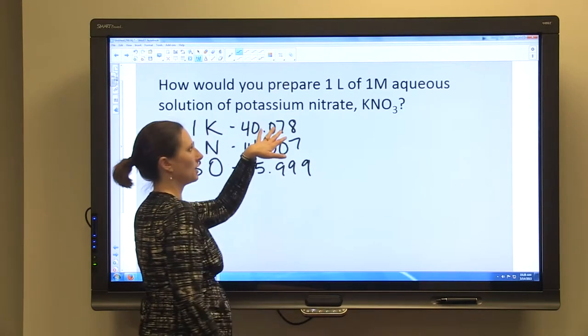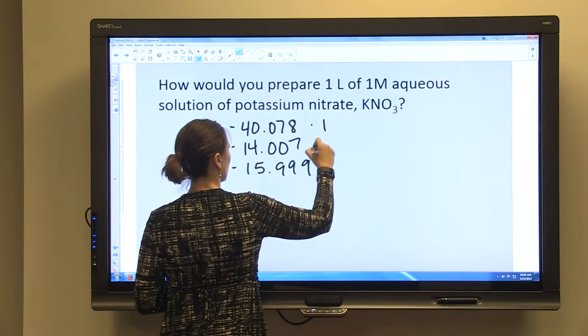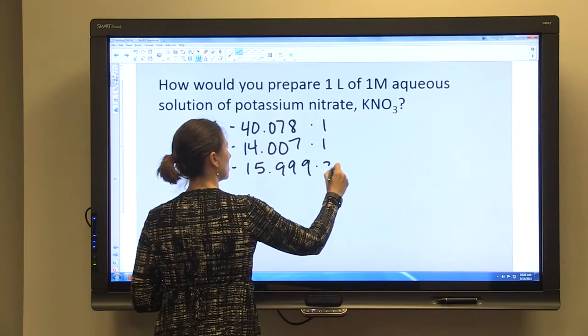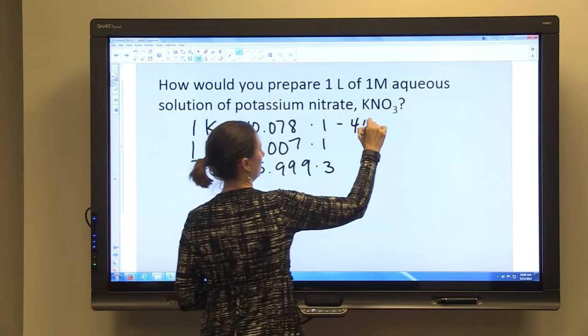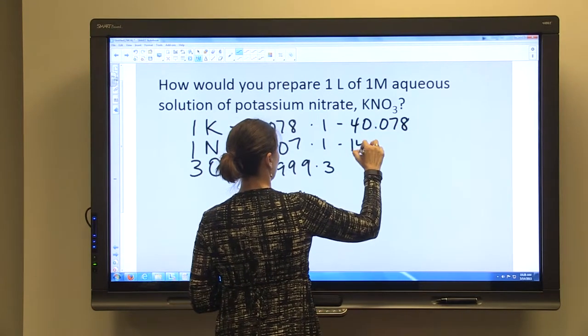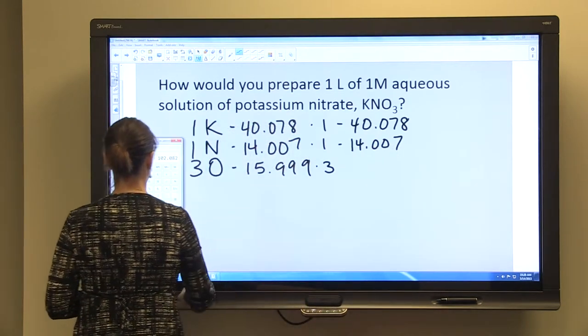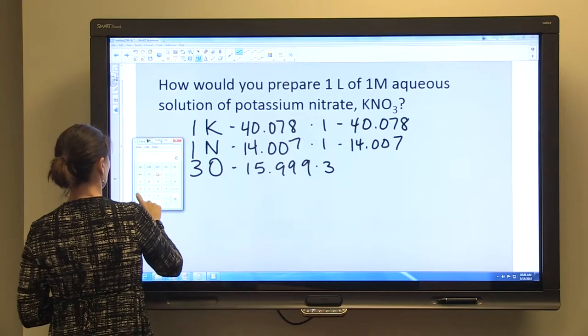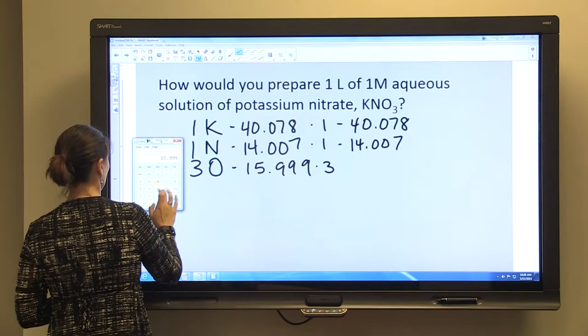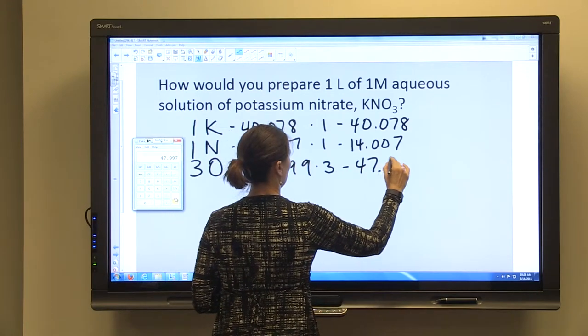Again, we're going to multiply by the number of atoms in the molecule. So these two are just one, and the oxygen is three. So 15.999 times three is 47.997.